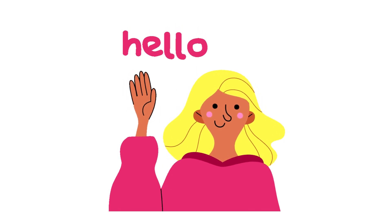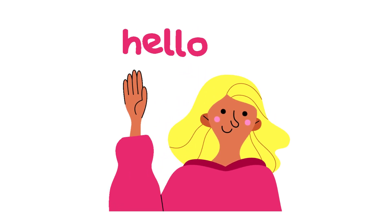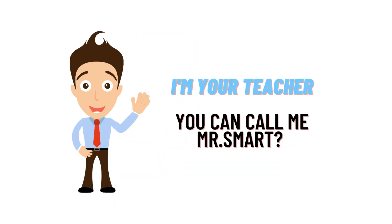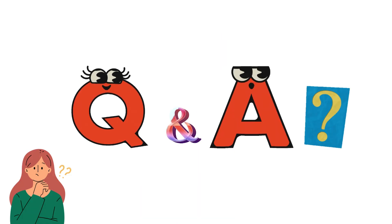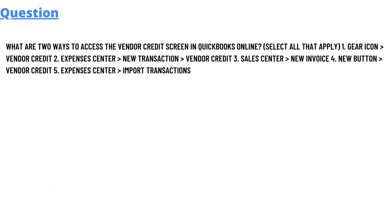Hello everyone, my name is Mr. Smart and I'm your teacher. I'll be teaching a different question and answer in this question and answer series. For today, the question we'll be discussing is: what are two ways to access the vendor credit screen in QuickBooks Online?